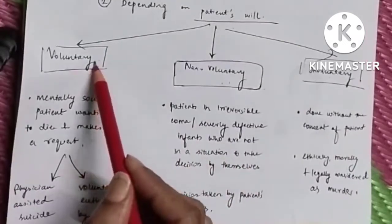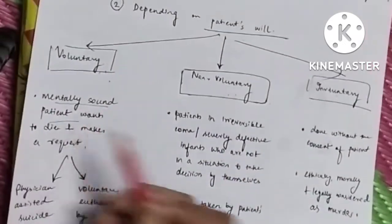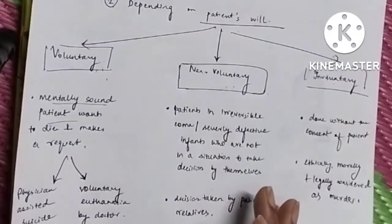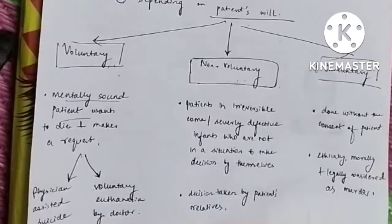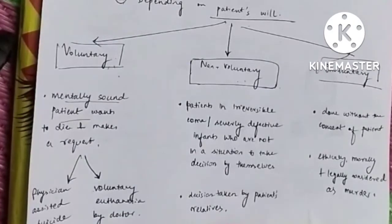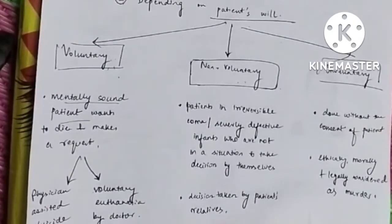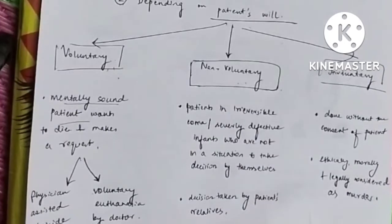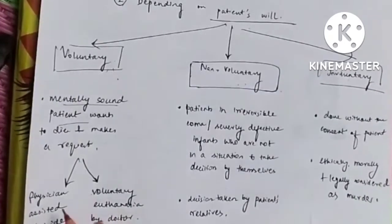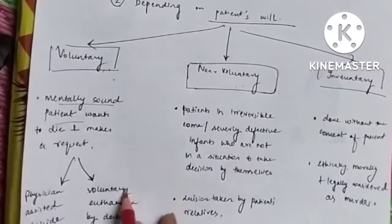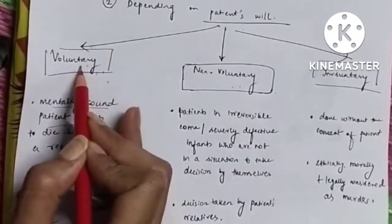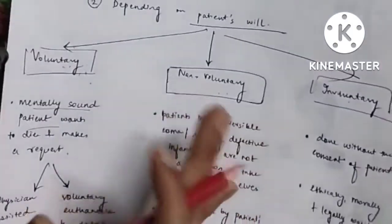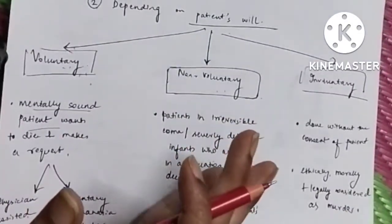Who will do the voluntary euthanasia? Those who are mentally sound patients and they themselves take the decision that they want to die. So they will either tell the physician that please inject a lethal drug, or they would say that give me the drug and I will kill myself. So this can be physician-assisted suicide or this can be voluntary euthanasia by the doctor. Basically, voluntary euthanasia means that the person or the patient is himself giving consent to the doctor that now I want to die, so either you help me die or I will commit suicide.